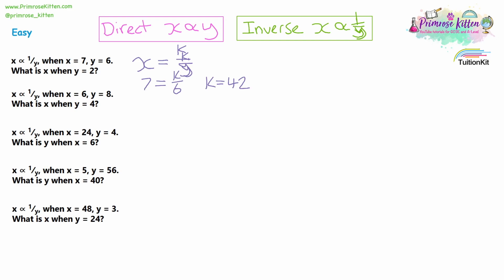Now we can write out the equation properly — we've found the constant that connects x and y. For the follow-up question, we want to know what x is when y equals 2. We substitute y equals 2, giving us x equals 42 over 2. And 42 divided by 2 is 21. So x equals 21.